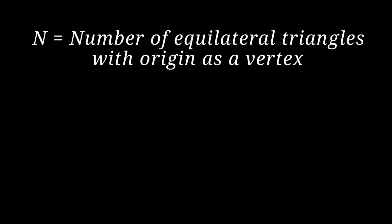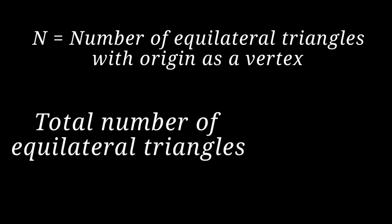So if we let N be the number of equilateral triangles with the origin as a vertex, then we can write the total number of equilateral triangles in terms of N. First, we multiply by 2^n because we have 2^n vertices in the cube. Then we divide by 3 because each and every equilateral triangle will be counted exactly three times.